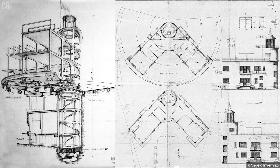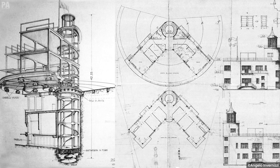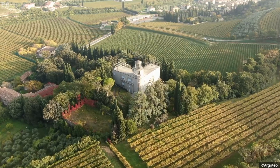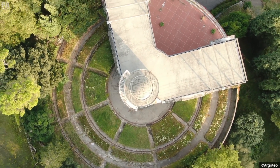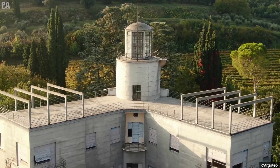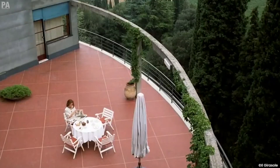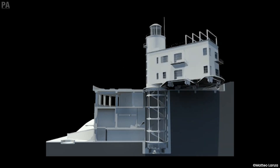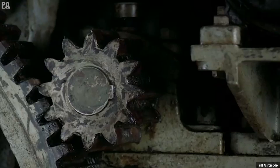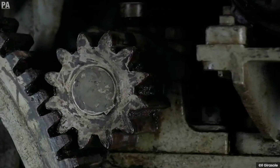A project that was actually built was the Villa Girasole by navy engineer Angelo Invernizzi. Built in 1935, it's a rotating house that follows the sun's movement to maximize heat and light on the interior. Girasole, which translates to sunflower in Italian, sits on a 44-meter diameter circular base and is an extraordinary work of architecture built during the ages of functionalist and futurist architecture — it's just like Dorothy's house in The Wizard of Oz, but slightly less chaotic.